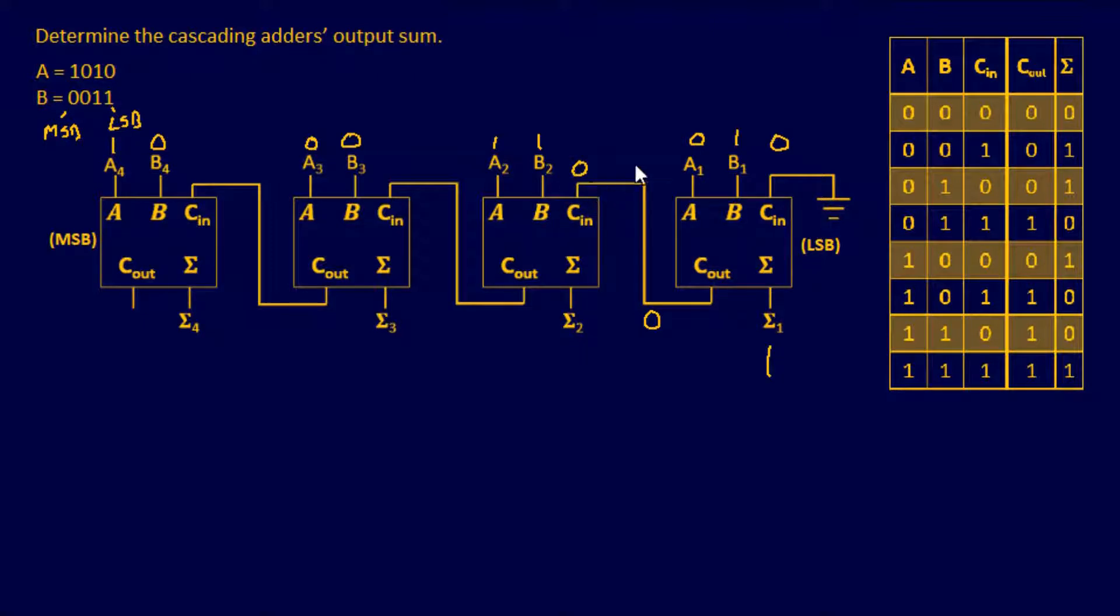And we're going to do the same thing on the next adder. So I have a 0 for our Cin. So we have 0 for Cin. Then we have 1, 1. So 1, 1, and then a C of 0.